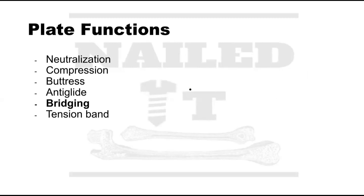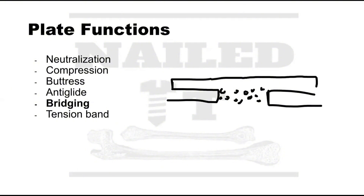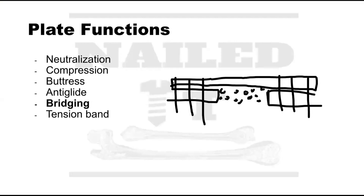Another way to use a plate is in bridging mode. Say we have a highly comminuted fracture with many different pieces where we're not going to be able to achieve primary bone healing. We can use a plate to bridge the fracture and provide stability so it heals via secondary bone healing. That's why it's called a bridging plate — you have screws going in on each side of the plate, about three on each side, bridging the comminuted fracture.